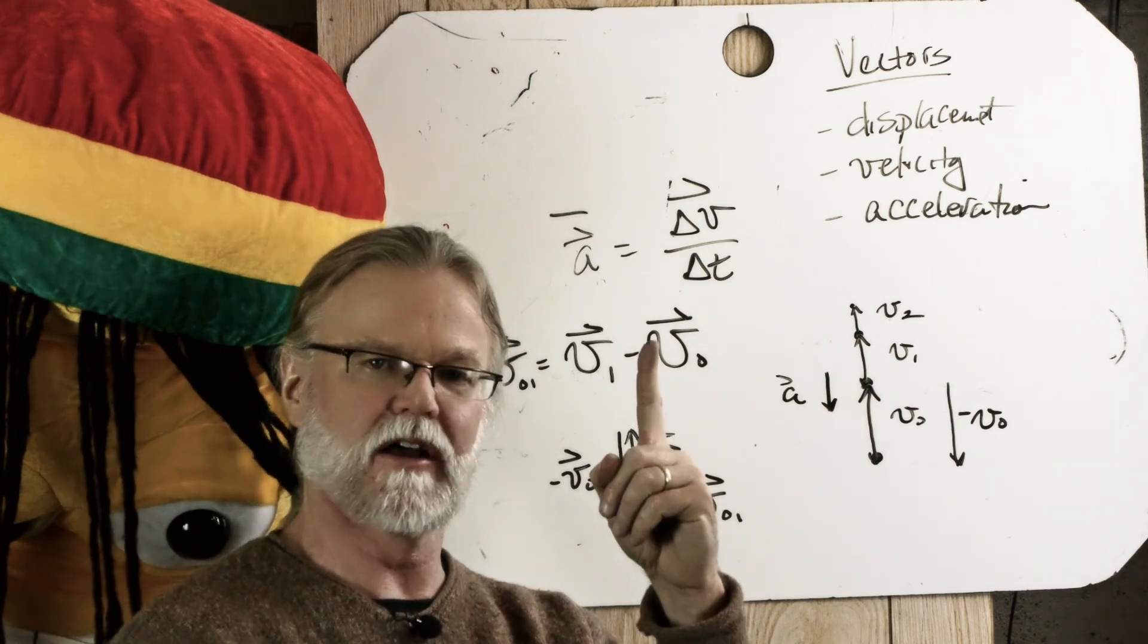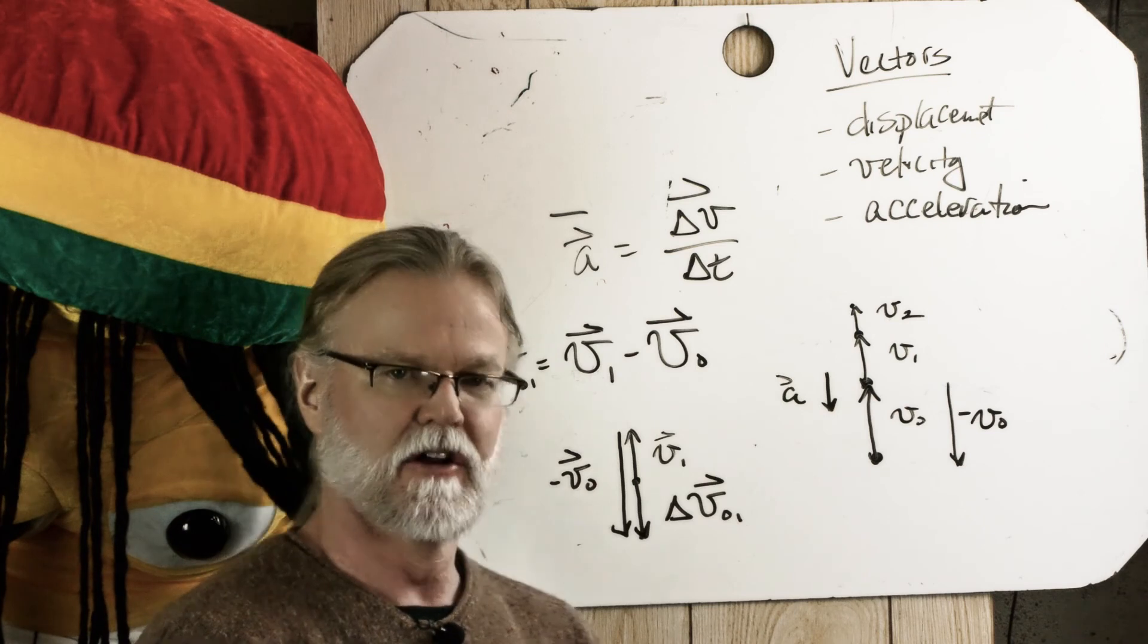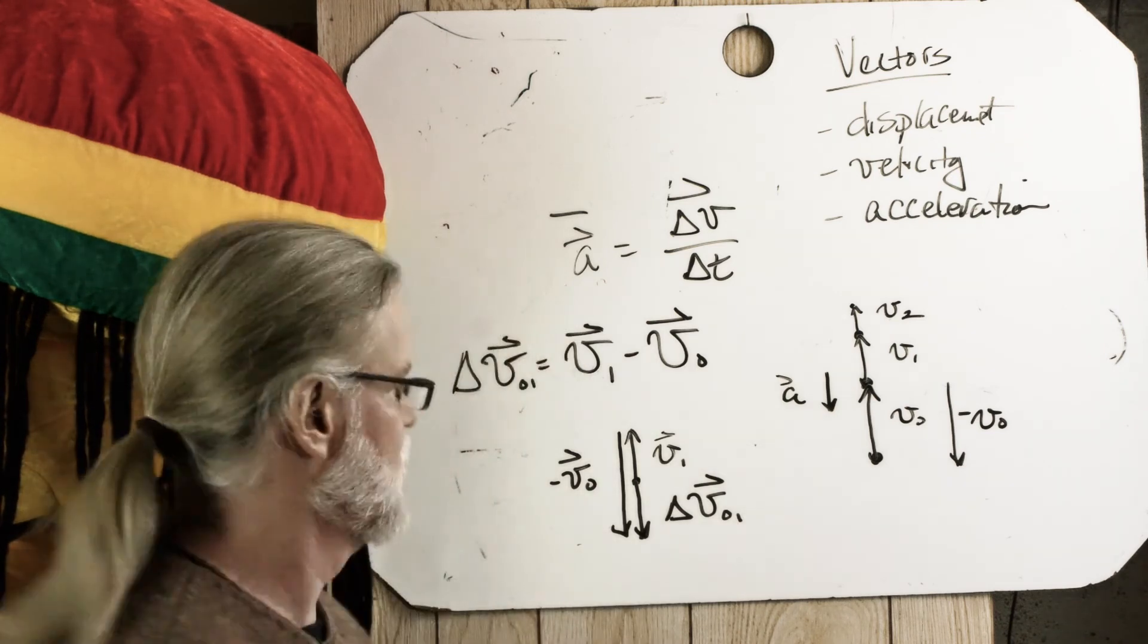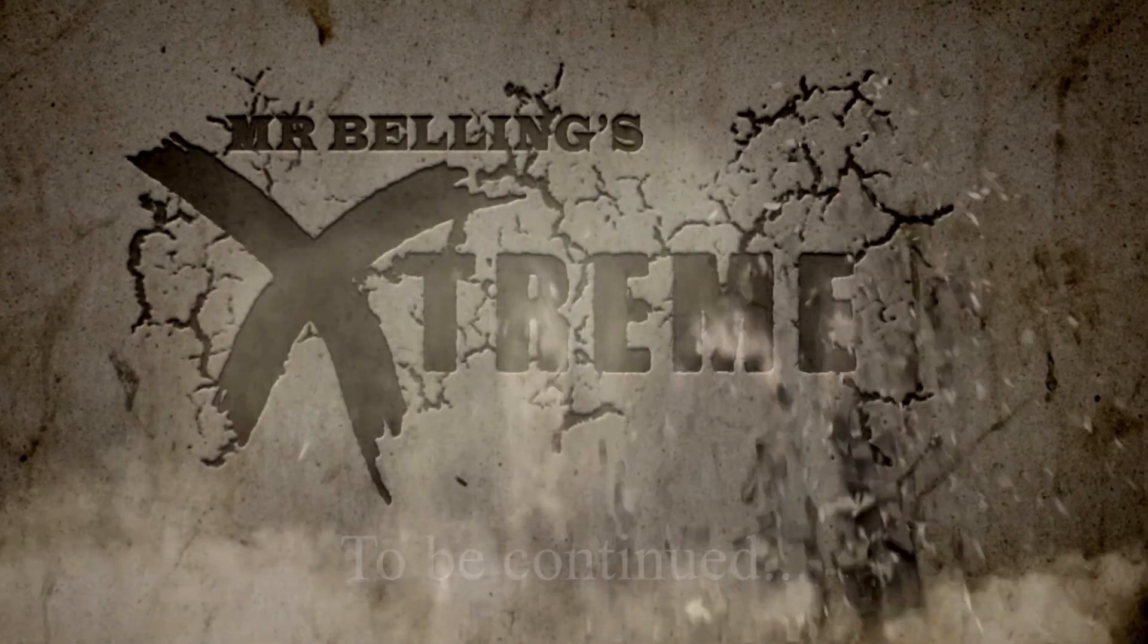So when something's going up it's accelerating downward because gravity's pulling it down. Of course there's a net force pulling it down. So it's accelerating downward.